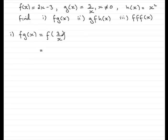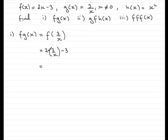That means wherever we see an x in f of x, we replace it with 3 over x. So that's going to be 2 times 3 over x, and then we have minus 3. If we simplify this, what we end up with is 6 over x minus 3.